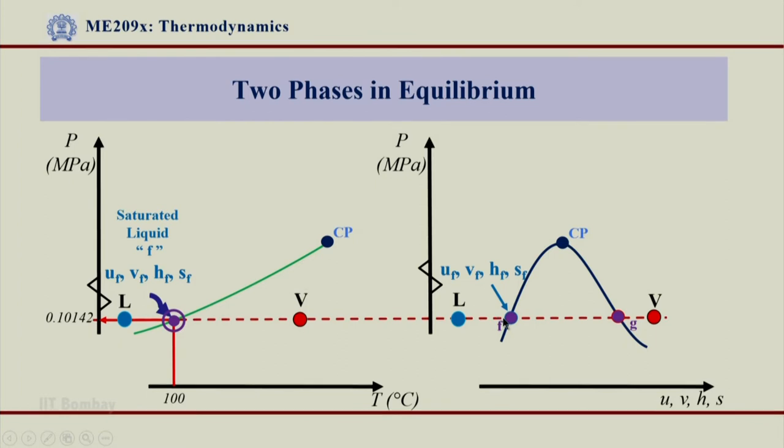The first point I hit is saturated liquid line, from where the phase transformation starts, and it continues from point f to point g, where 100% liquid now will get converted to 100% vapor. The properties at this point, at point g, are given with the subscript of g, and they are given as now Ug, Vg, Hg, and Sg.